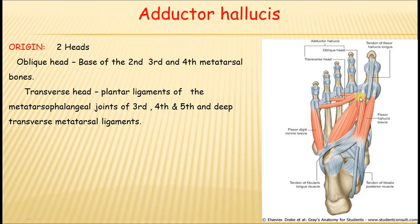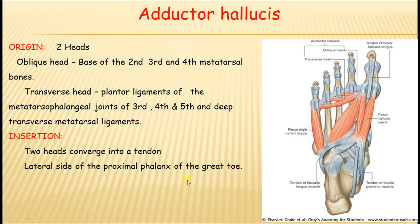Both heads of adductor hallucis meet and insert into the lateral side of the base of the proximal phalanx of the great toe. Nerve supply is from the deep branch of the lateral plantar nerve. Its action is adduction of the great toe towards the axis of the foot, which passes through the second toe.